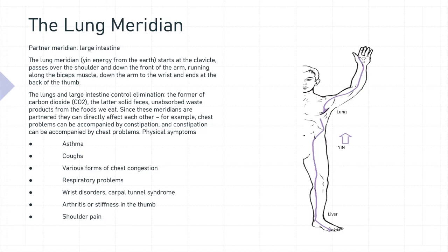For example, chest problems can be accompanied by constipation, and constipation can be accompanied by chest problems. The physical symptoms are asthma, coughs, various forms of chest congestion, respiratory problems, wrist disorders such as carpal tunnel syndrome, arthritis or stiffness in the thumb, and shoulder pain.